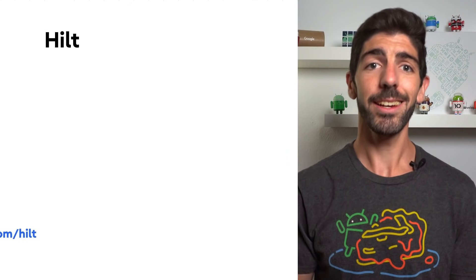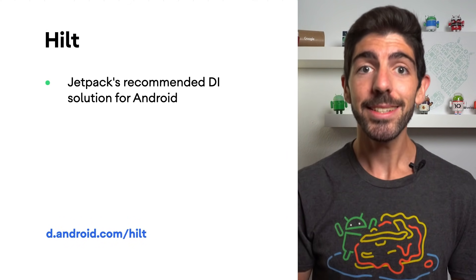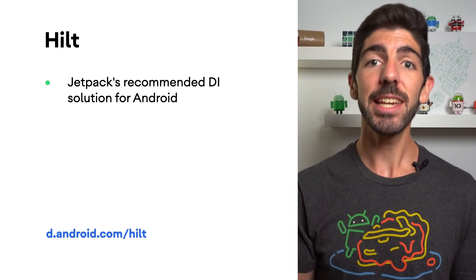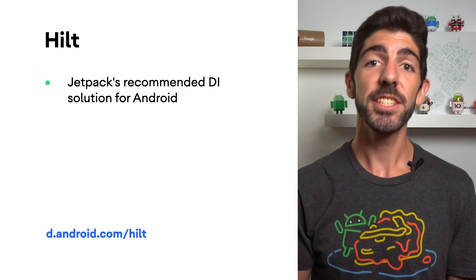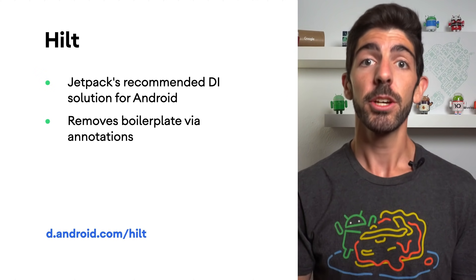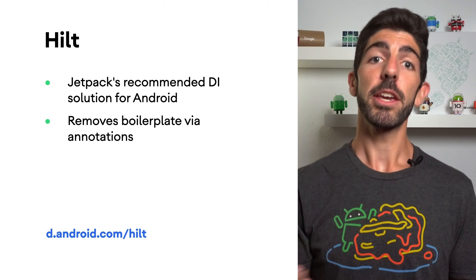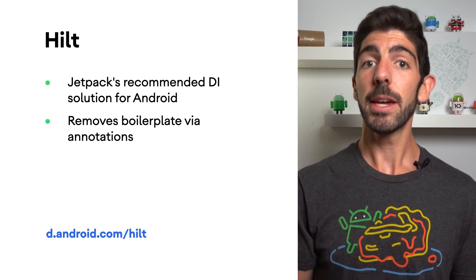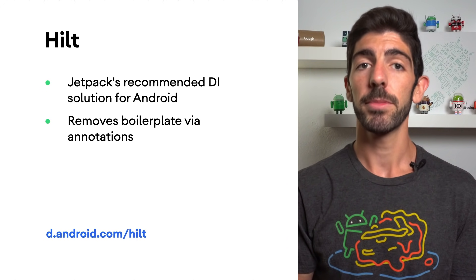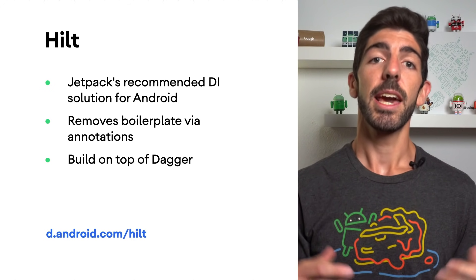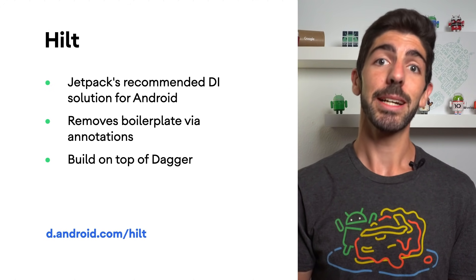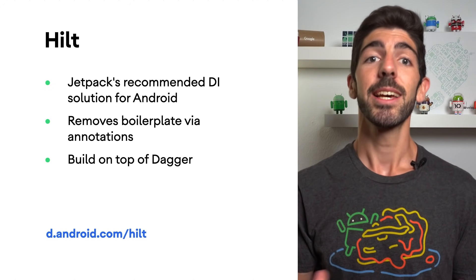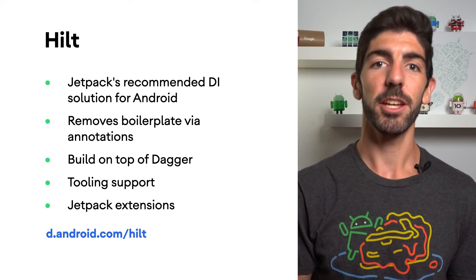And here is where Hilt comes into play. Hilt is a dependency injection library developed by Google that helps you get the most out of DI best practices by doing the hard work and generating all the boilerplate you would have needed to write otherwise. By using annotations, Hilt generates that code for you at compile time, making it really fast at runtime. This is done using the power of Dagger, a JVM DI library that Hilt is built on top of. Hilt is Jetpack's recommended DI solution for Android apps, and it comes with tooling and other Jetpack library support.